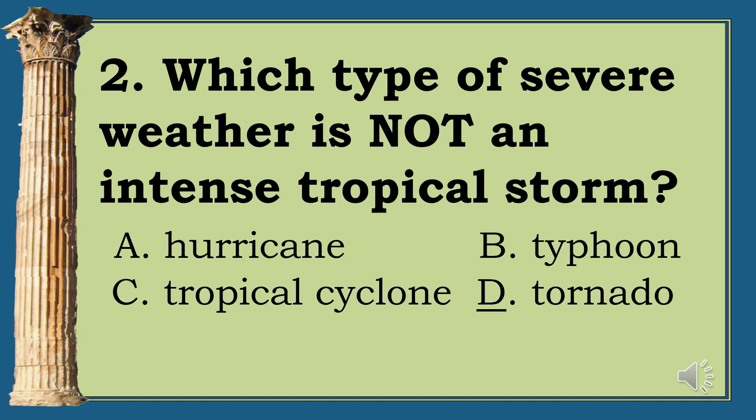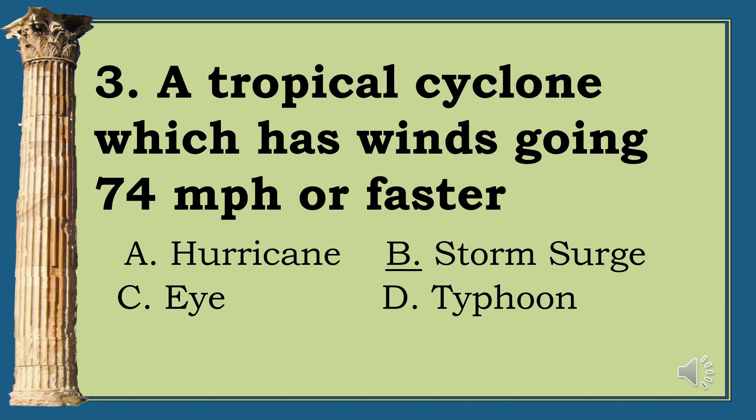Question 3: A tropical cyclone which has winds going 74 mph or faster. A. Hurricane. B. Storm Surge. C. Eye. D. Typhoon. The correct answer is letter A, Hurricane. Question 4: Quiet, calm area at the center of a typhoon. A. Hurricane. B. Storm Surge. C. Eye. D. Typhoon. The correct answer is letter C, Eye.